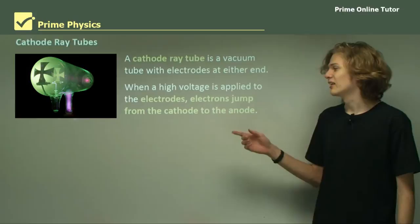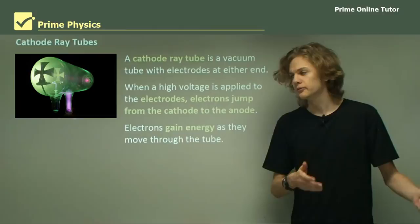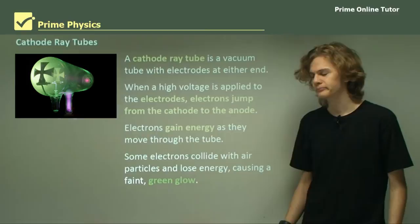When a high voltage is applied to the electrodes, electrons jump from the cathode, the negative terminal, to the anode, the positive terminal. As they do this they gain a lot of energy because they're being accelerated through an electric field, and some electrons collide with air particles and that produces a green glow which is noticeable, and this is what creates the green glow you can see here in the cathode ray.